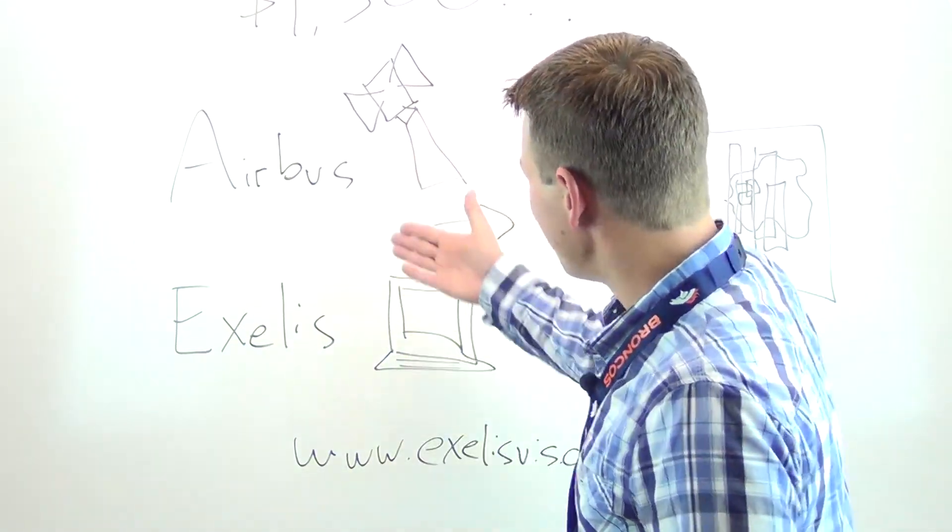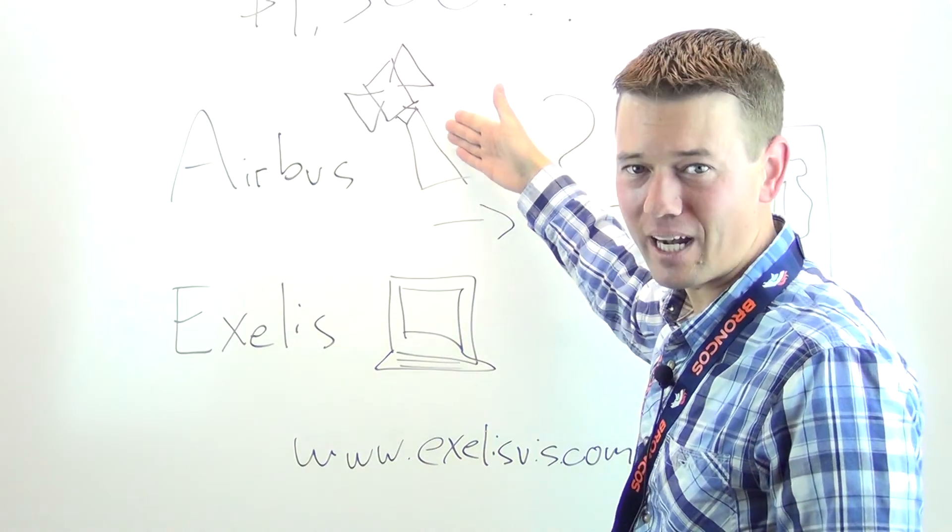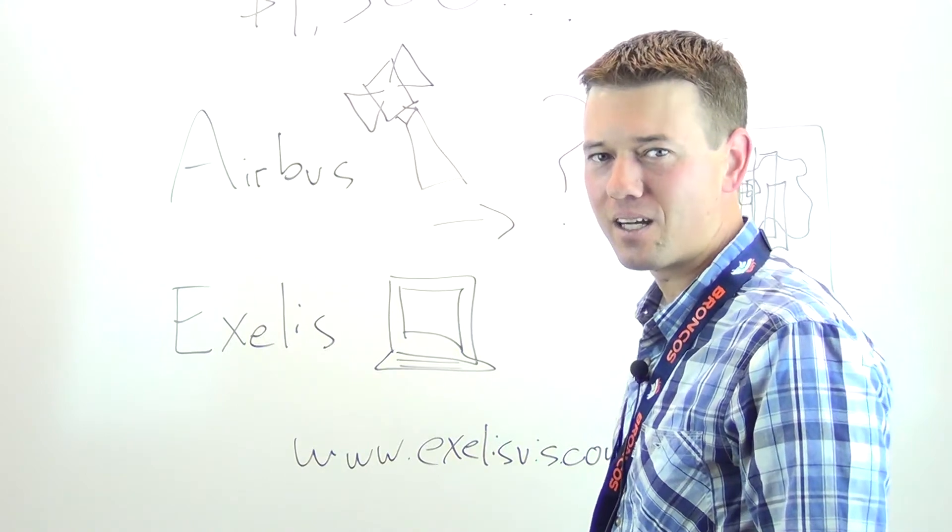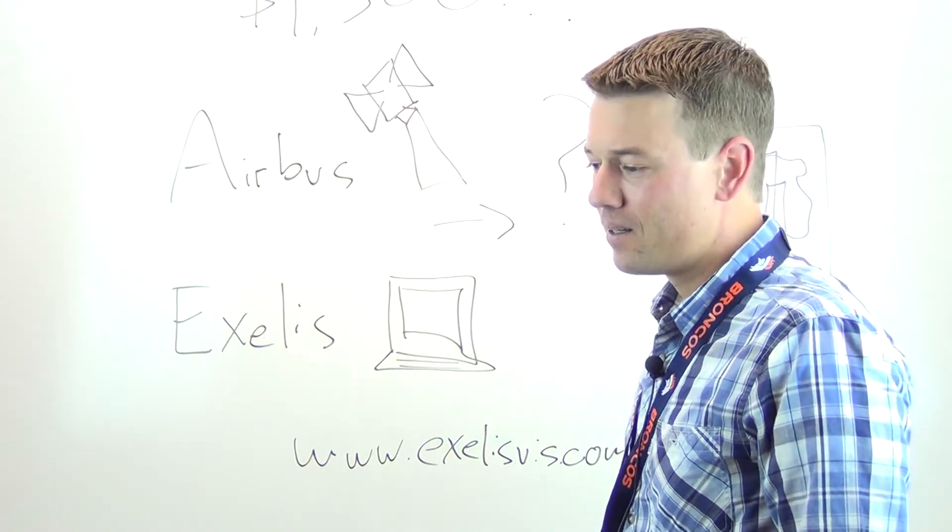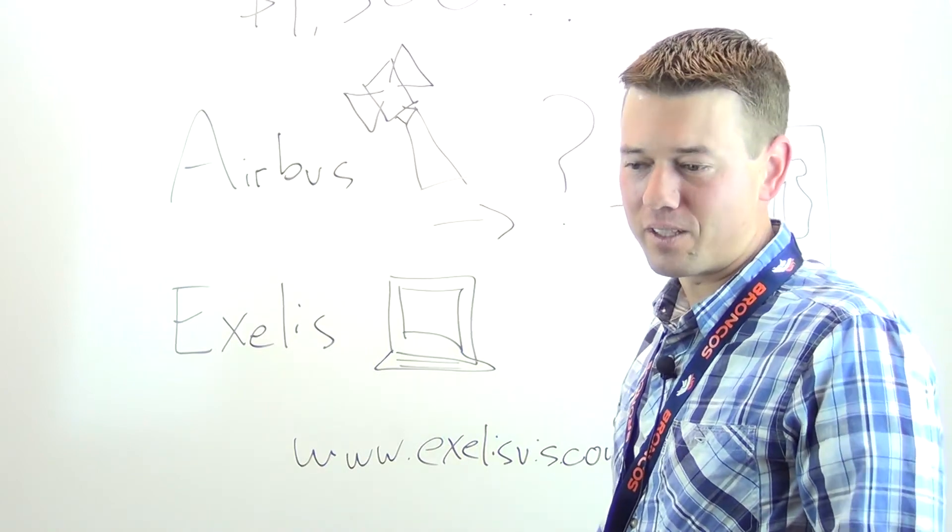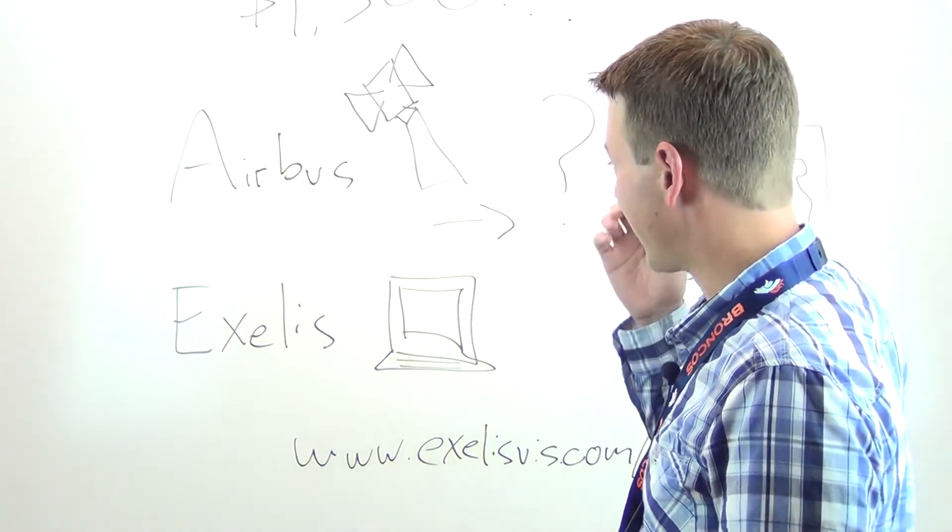As you can see over here, we have Airbus and Excellus. Airbus supplies some of the best satellite imagery out there. They have a great constellation of different types of satellites with high resolution satellites along with SAR data, which is synthetic aperture radar, and a bunch of other different data types that you can get from their catalog.